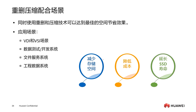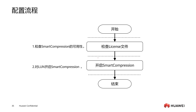The configuration of the compression feature also requires checking the license permission first, then enabling the compression feature. Check availability, then enable the compression function for LUN. Finally, let's review this lesson. In this lesson, we mainly studied smart dedupe and smart compression — their working principles, application scenarios, and configuration process.